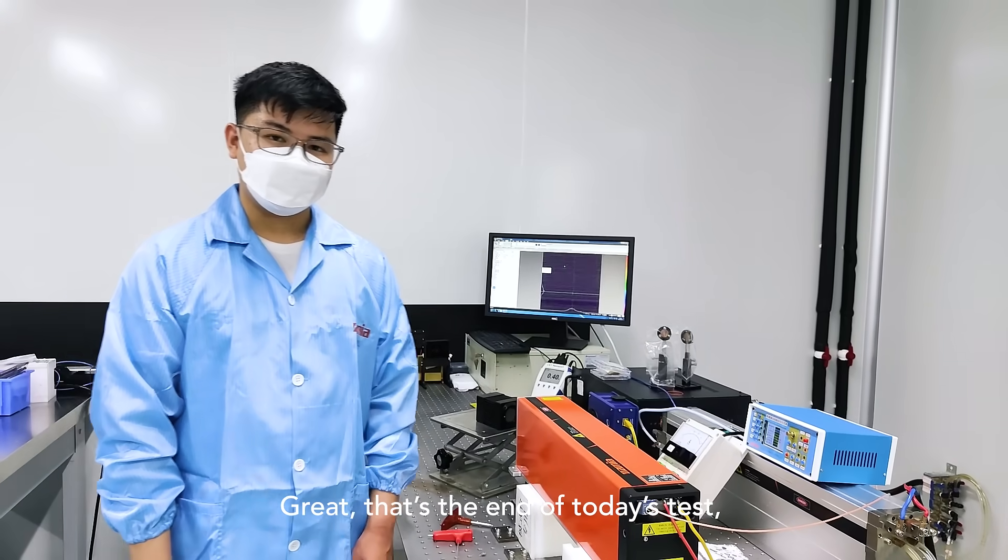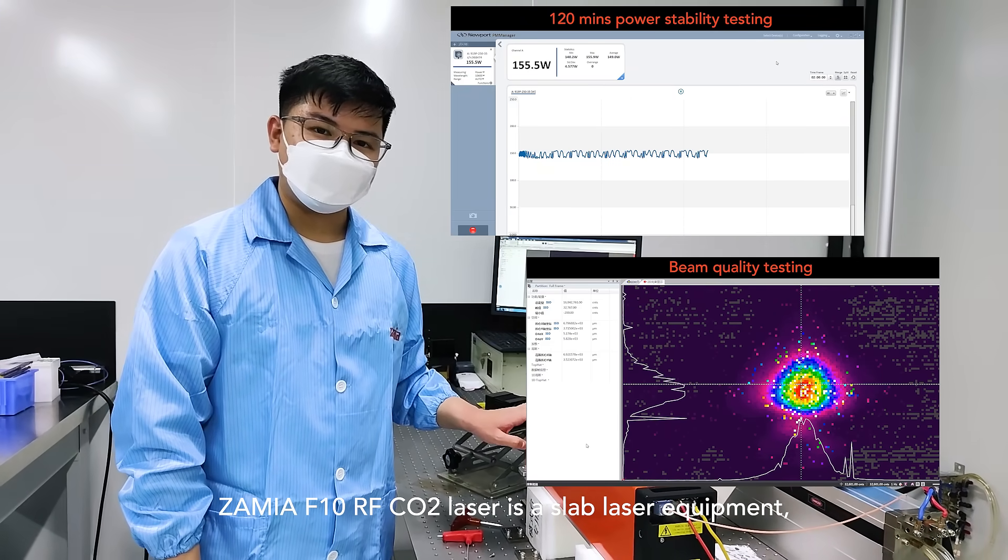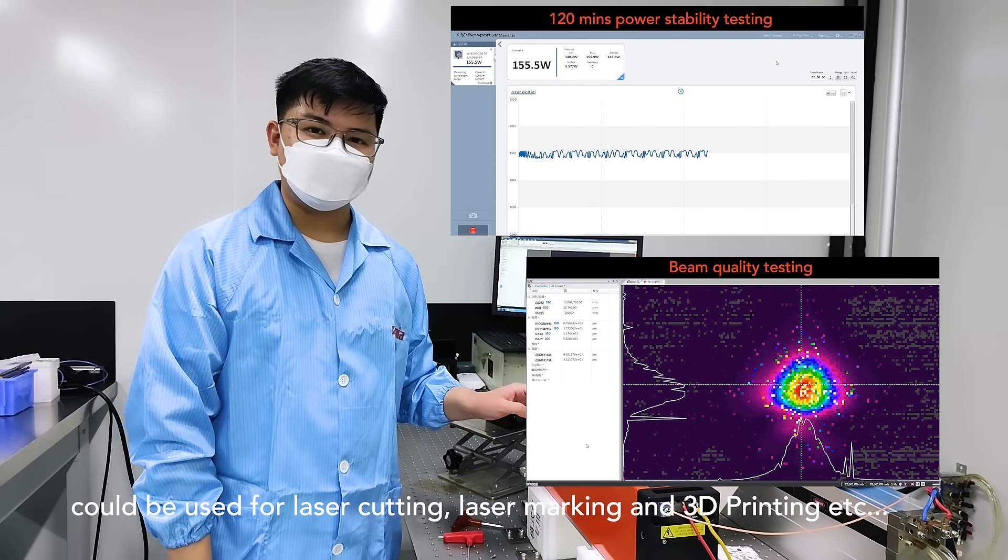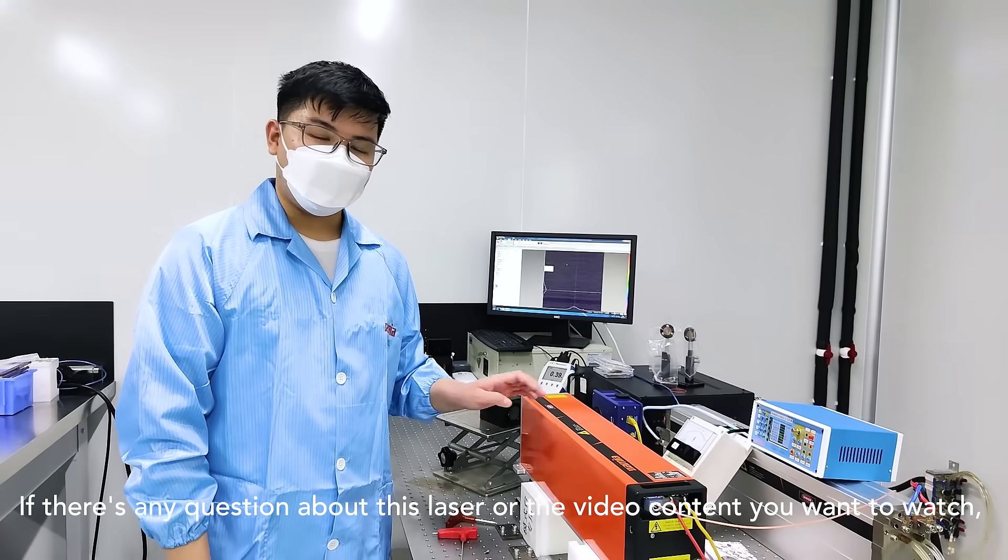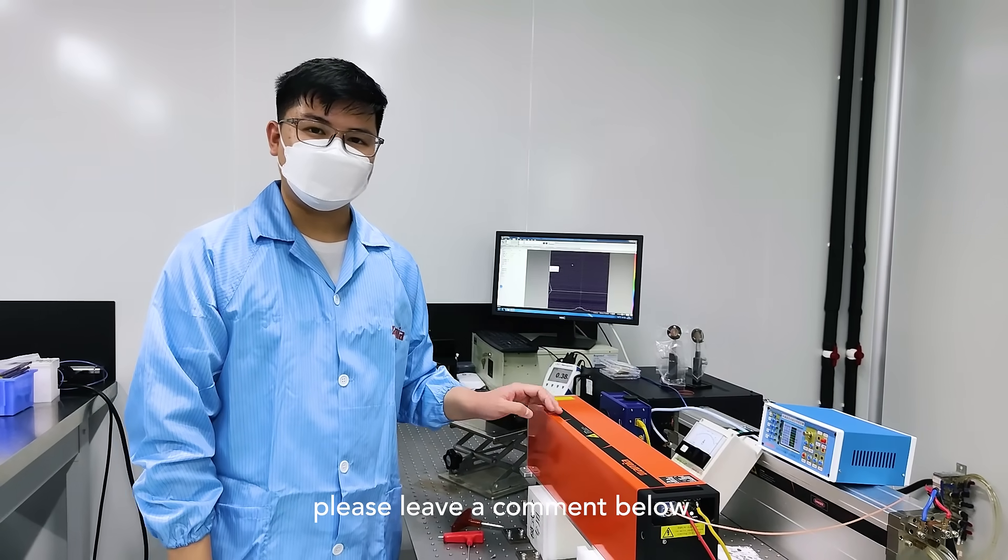Great, that's the end of today's test. The Zamiya F10 RF carbon dioxide laser is a slab laser equipment. It could be used for laser cutting, laser marking, and 3D printing, etc. If there's any question about this laser or the video content you want to watch, please leave a comment below.